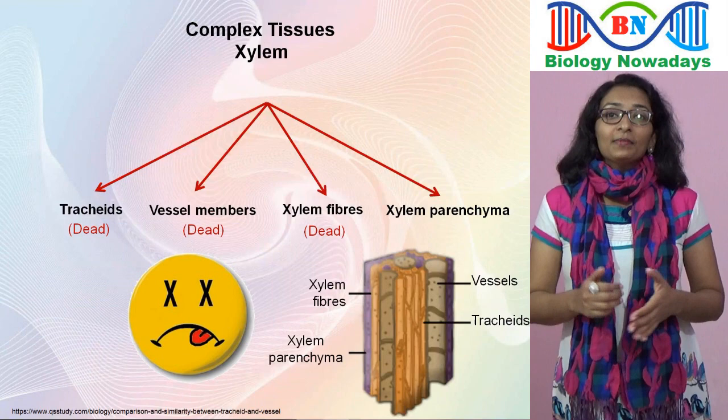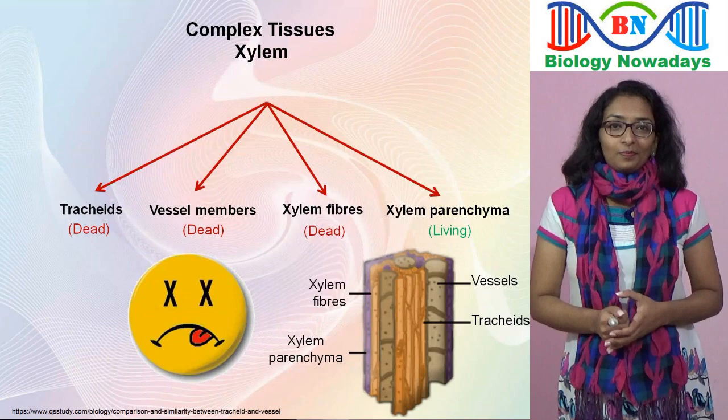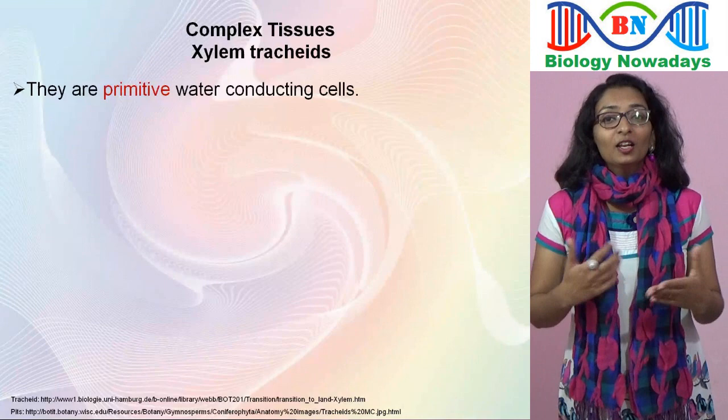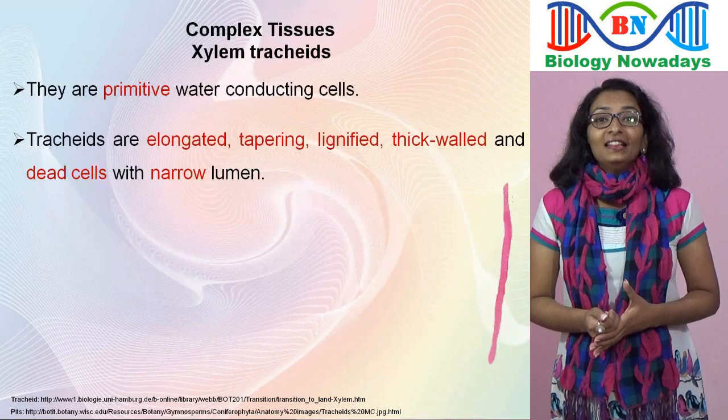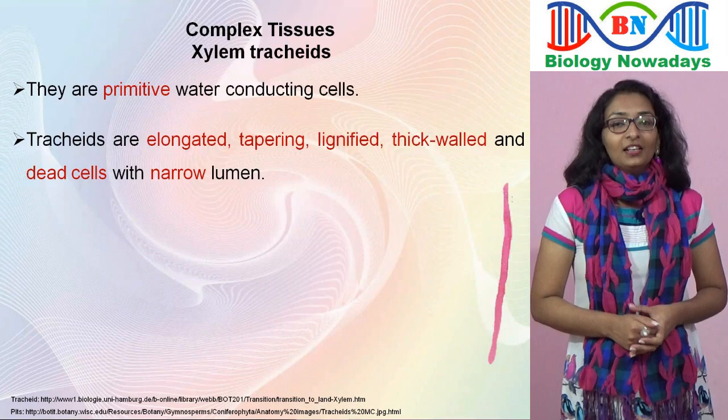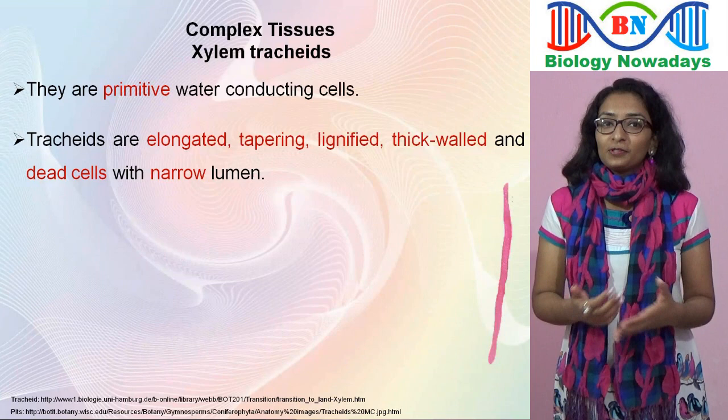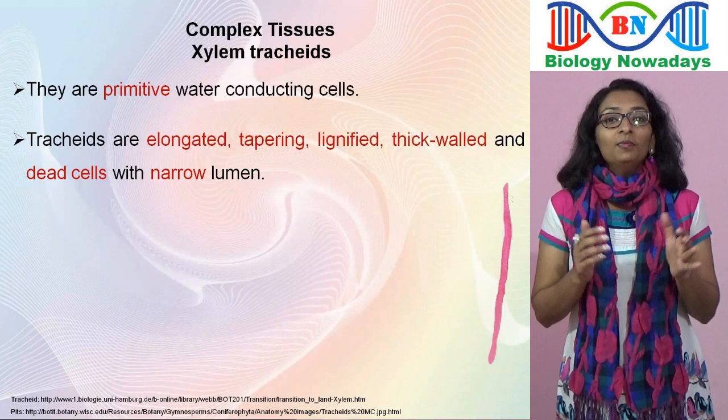First let's see what tracheids are. Tracheids are primitive water conducting cells. They are elongated, tapering cells with narrow lumens. At maturity, they have thick hard cell walls due to deposition of lignin. Lignin is a cross-linked phenolic polymer. Lignin deposition makes these cells dead, but still lignin has some important roles in the transport of water.